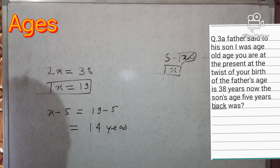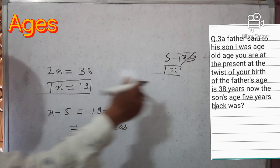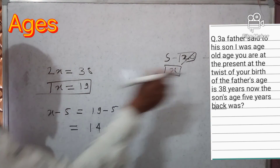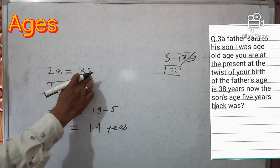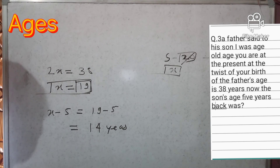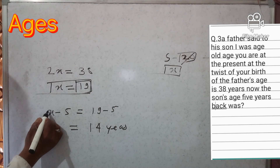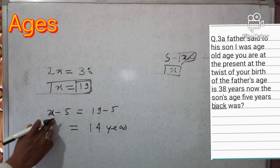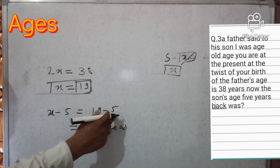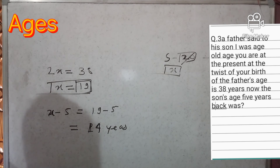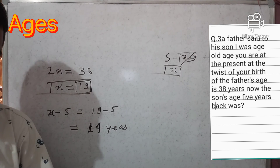So father is 2x and 2x equals 38, giving x equals 19. This is the son's current age. Our target is to find the son's age five years back: x minus 5 equals 19 minus 5 equals 14 years. The son's age five years ago is 14 years.